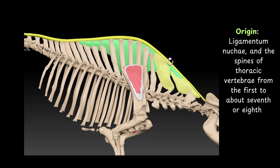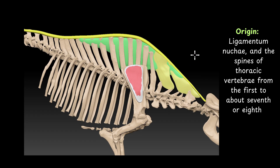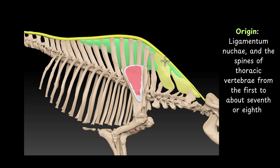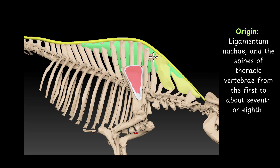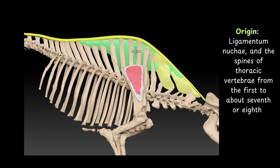To show you the actual origin I have removed the muscle from this side. This green-colored muscle is the rhomboideus — the color is given for proper visualization and identification. The muscle originates from ligamentum nuchae and from the spines of the thoracic vertebrae — first, second, third, fourth, fifth, sixth, seventh, eighth. So from the spines of the first to seventh or eighth thoracic vertebrae, and also from the ligamentum nuchae. That is the origin of the rhomboideus muscle.